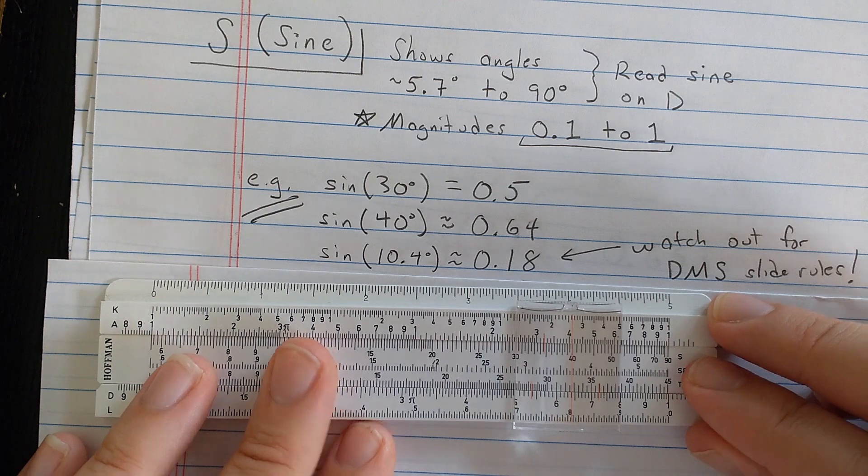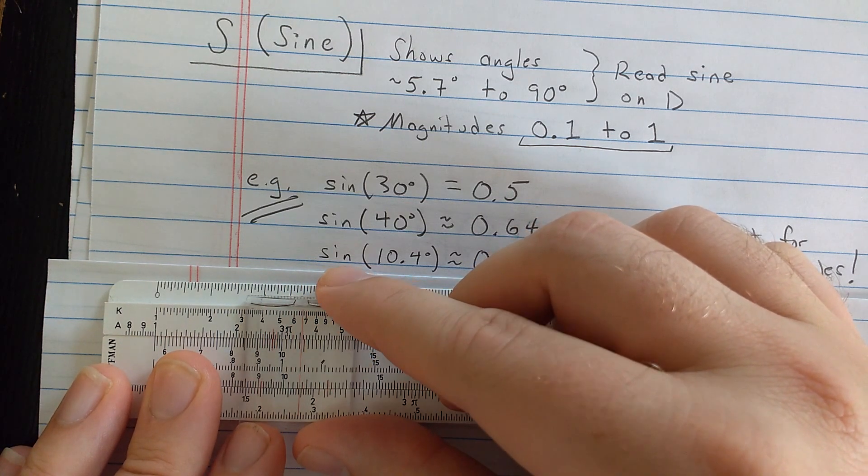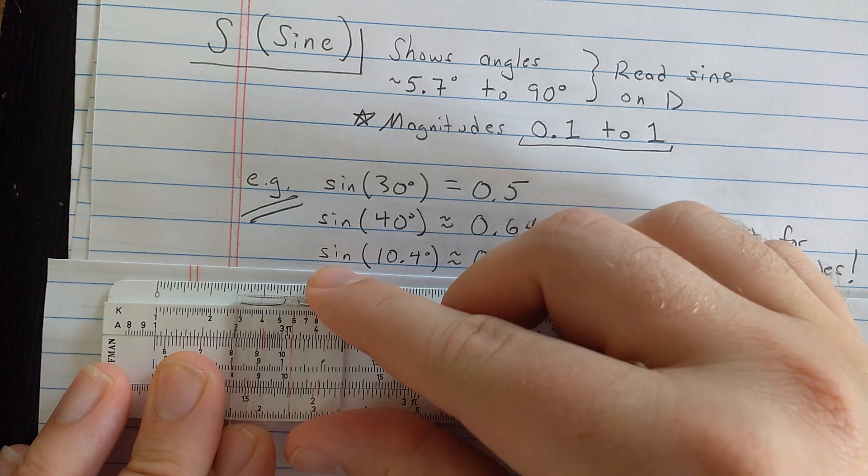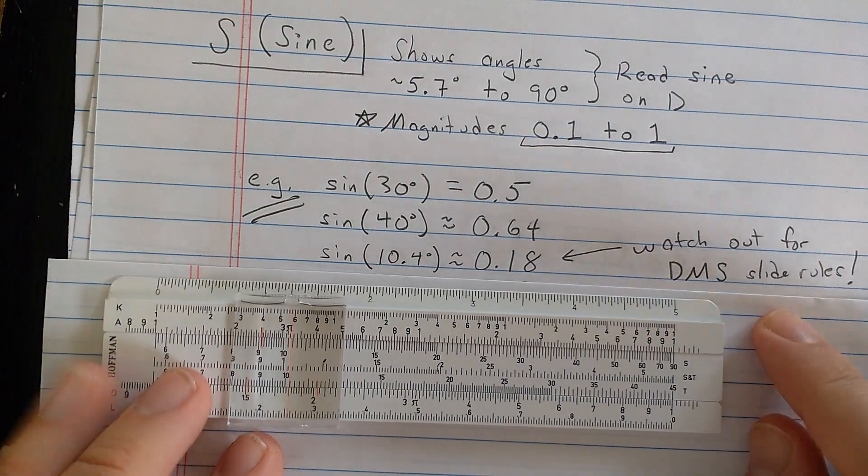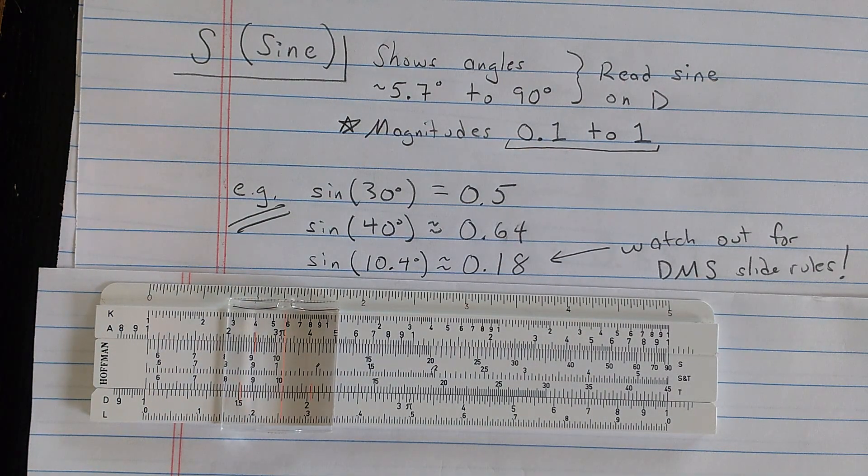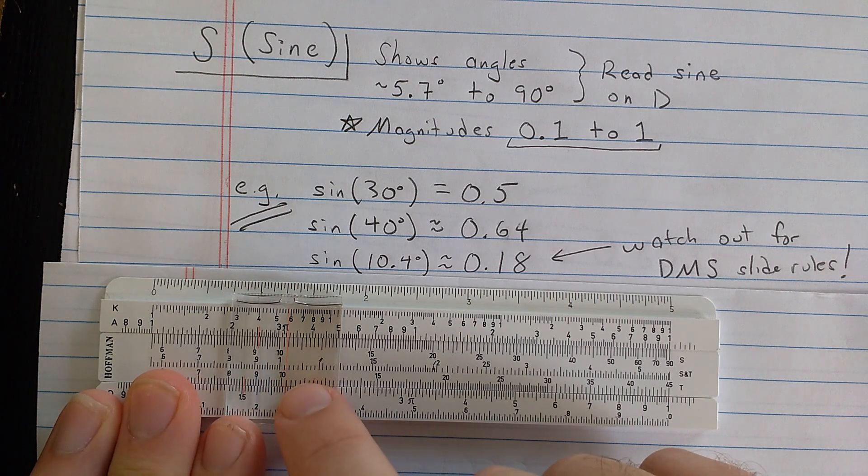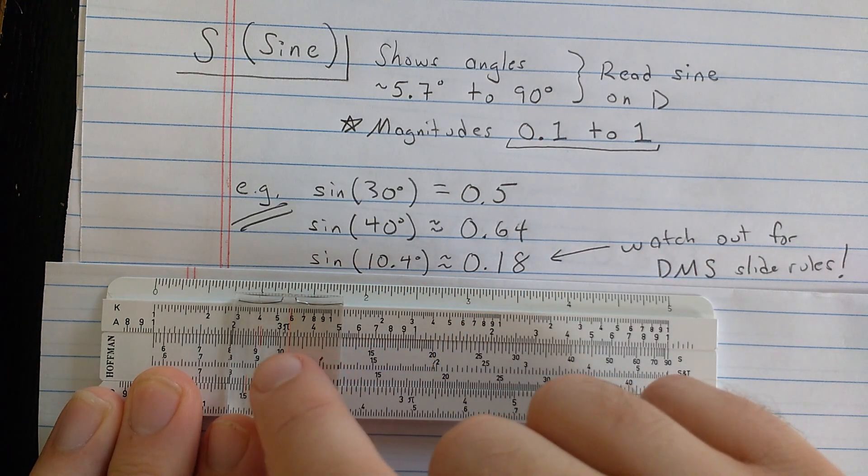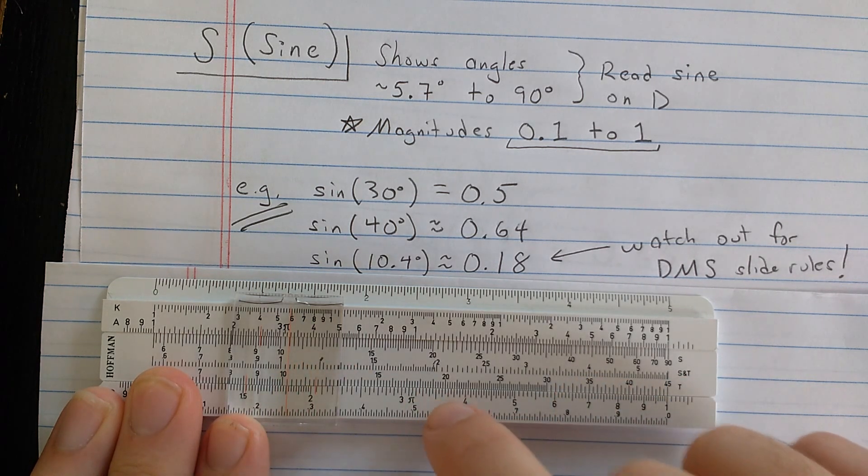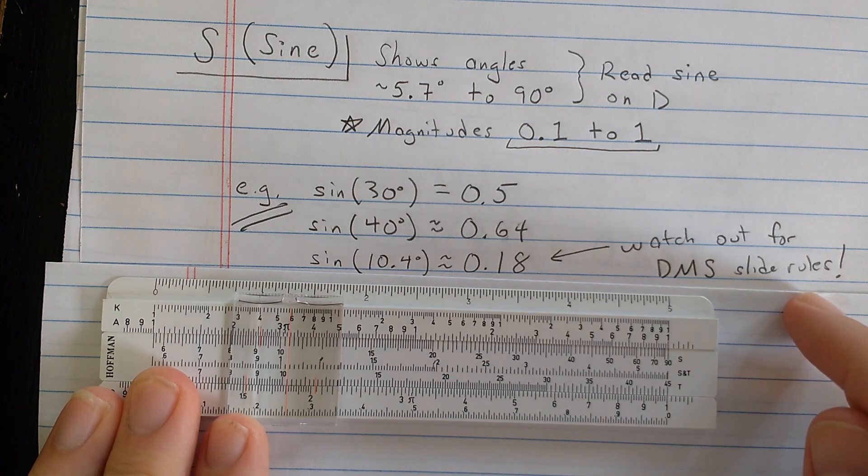So I could find 10.4 degrees, so here's 10.0, this is actually 11, so 10.4 is here. And I'll read the sine off down here, about 0.18. Now, you need to watch out. A lot of slide rules, especially older ones or some really cheap slide rules, have the lower divisions of the sine and the tangent scales in minutes. So they're not broken into decimal degrees like this one is. This corresponds nicely to the other scales on this slide rule, but you will find slide rules which are divided there in a different way, because they're expecting the user to use degrees, minutes, seconds. So watch out for that.